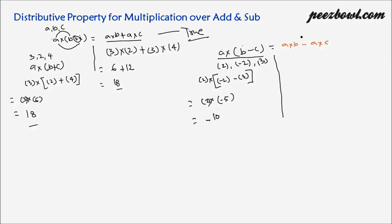Let us put these values on our right hand side: a multiplied by b minus a multiplied by c, that is 2 multiplied by minus 2, minus 2 multiplied by 3. This is equal to minus 4 minus 6, which is minus 10. Here also we see that left hand side is equal to right hand side, which means distributive property for multiplication over subtraction is also true.